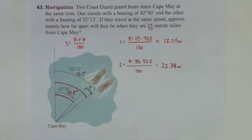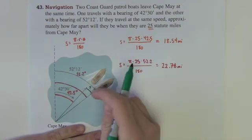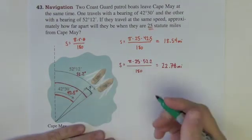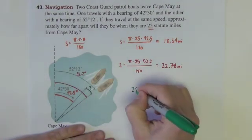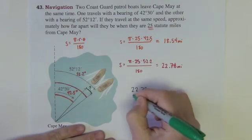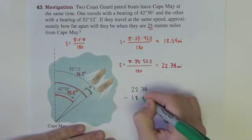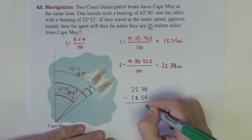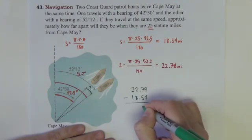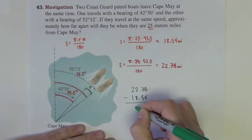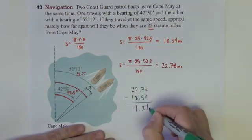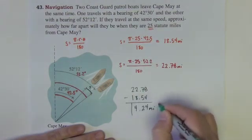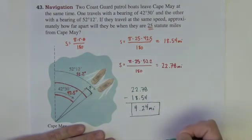Well, what I want then is the difference between each of these ships' respective arcs, where they are, so I'm going to take 22.78 minus 18.54. Subtracting this, I get 4.24 miles. Almost four and a quarter miles apart.